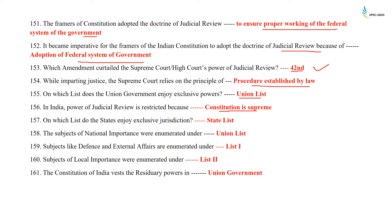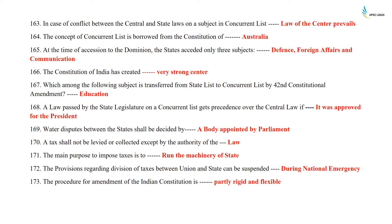On which list does the state enjoy exclusive jurisdiction? It is the State List. The subjects of national importance are enumerated under the Union List. Subjects like defence and external affairs are enumerated under List 1. Subjects of local importance are enumerated under List 2. The Constitution of India vests the residuary powers in the union government. In case of conflict between central and state laws on a subject in the Concurrent List, the law of the centre prevails. The concept of the Concurrent List is borrowed from the Constitution of Australia. At the time of accession to the Dominion, the states ceded only three subjects — defence, foreign affairs, and communication. The Constitution of India has created a very strong centre.